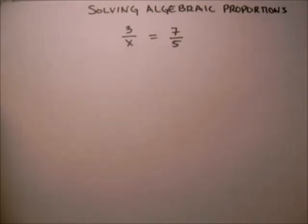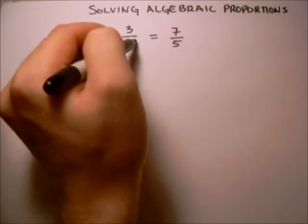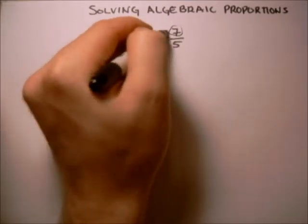In order to solve it, what we want to do is something called cross-multiplying. What cross-multiplying is is where we take what we have on the bottom here and multiply it with what we have on the top here.